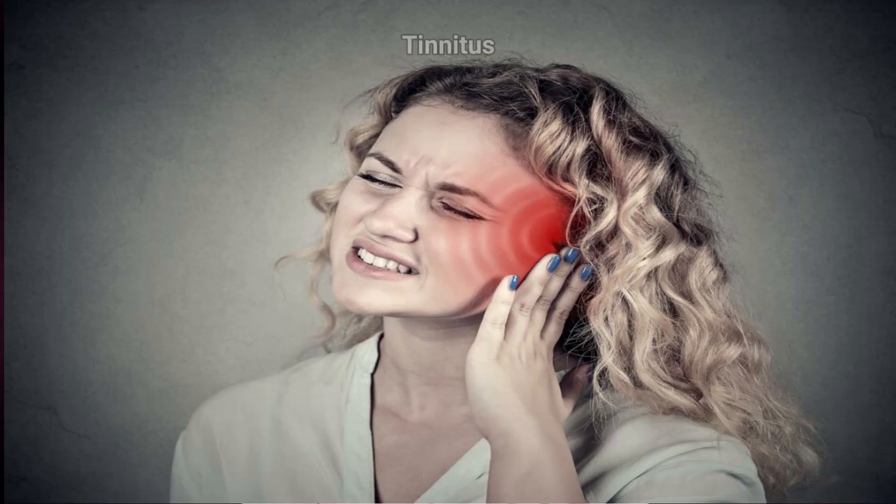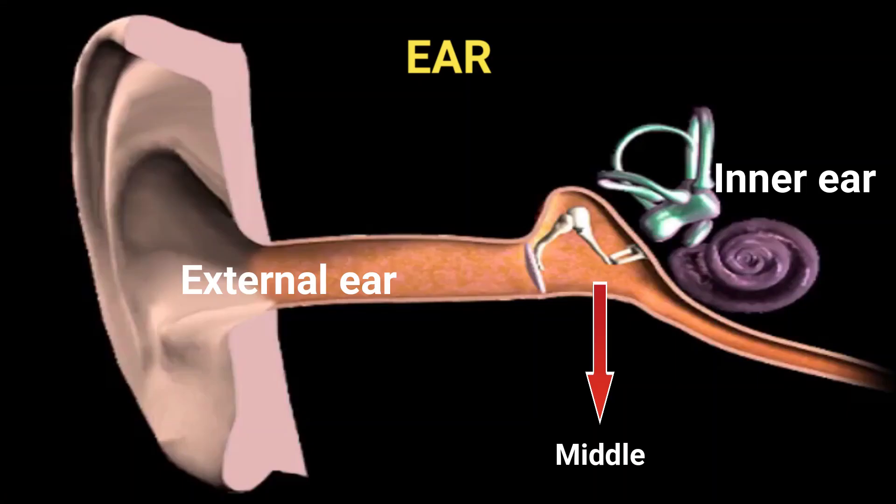The next topic is the truth about tinnitus. There are many sounds associated with this condition. There are many sounds that can be heard depending on the affected part of the ear — the external ear, the middle ear, and the inner ear.